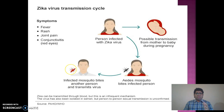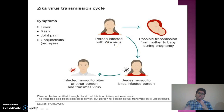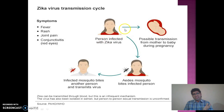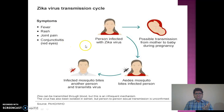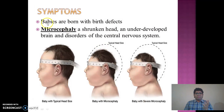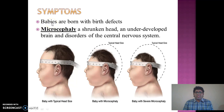Looking into the Zika virus transmission cycle: when a mosquito bites an infected person and the same mosquito bites another person, that causes transmission of the virus. An infected mother can also transmit the virus through pregnancy. Symptoms include fever, rash, joint pain, and conjunctivitis. Babies can be born with birth defects; one of the major symptoms is microcephaly.